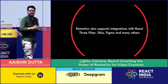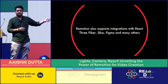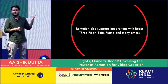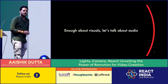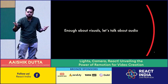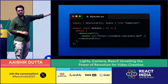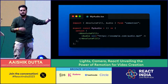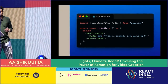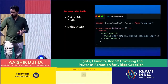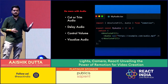Not just Lottie — Remotion supports many other integrations like React Three Fiber for 3D projects, Skia, Figma, and many more. And videos aren't complete without audio. Remotion lets you simply drop in an audio component, pass the URL of your audio, and you've got audio. You can also trim it, delay it, control the volume, and even make visualizations out of it, like audiograms for podcasts.